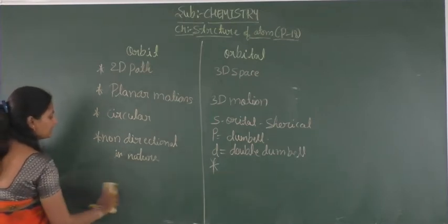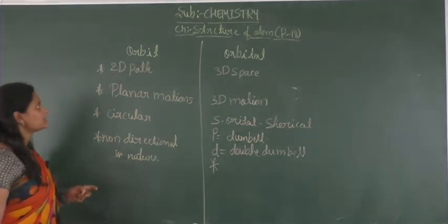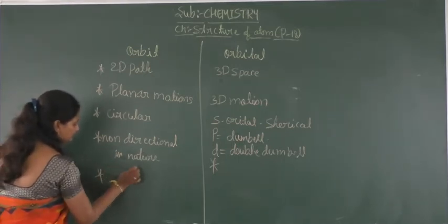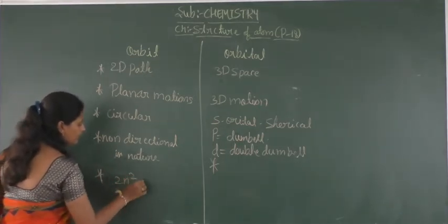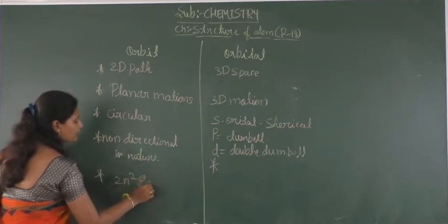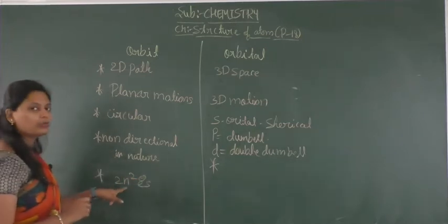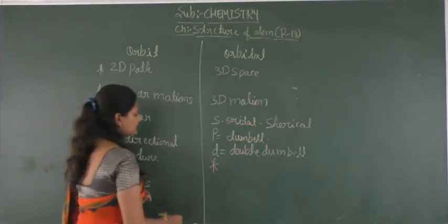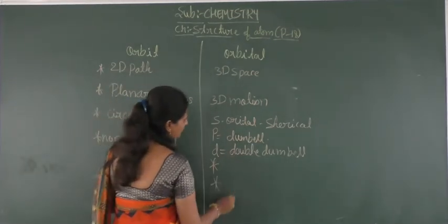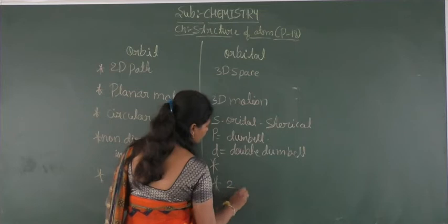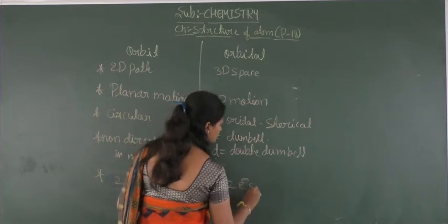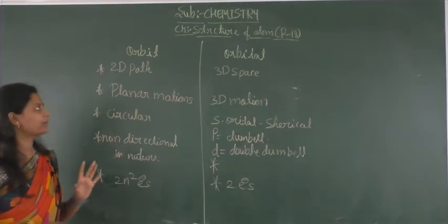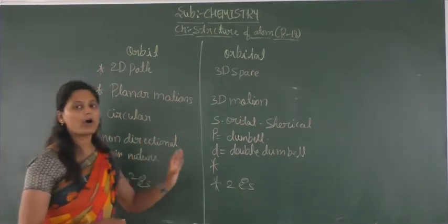When we consider the filling of electrons: in an orbit, we are able to fill 2n² electrons. But when we consider an orbital, we are going to fill only 2 electrons in each orbital. These are some differences between orbit and orbitals.